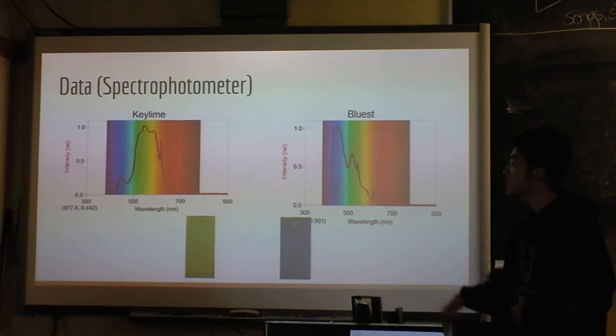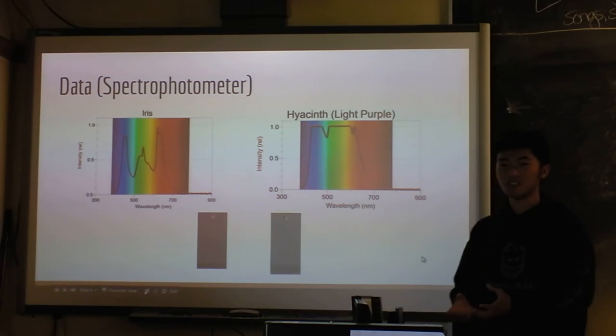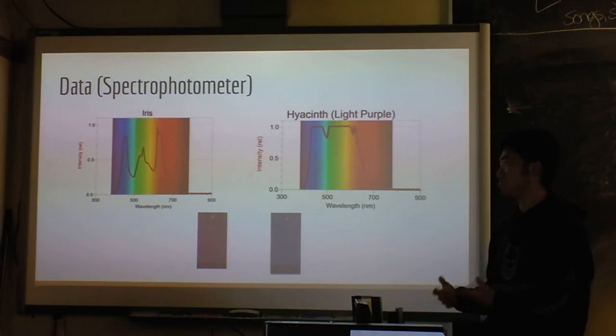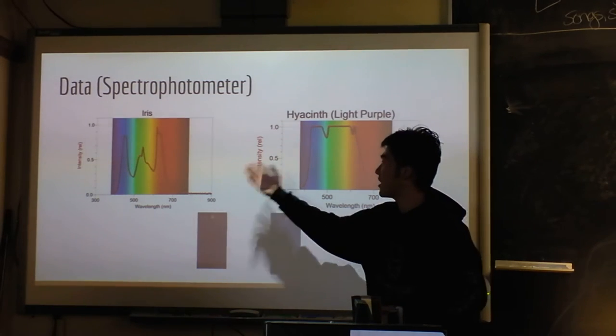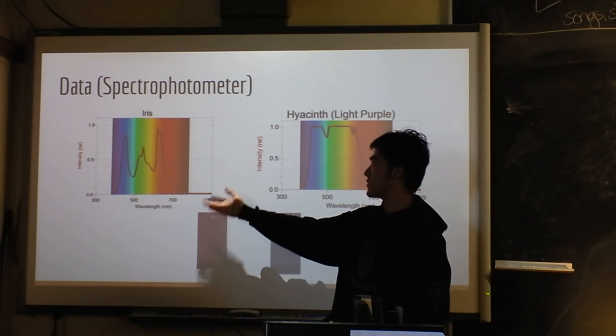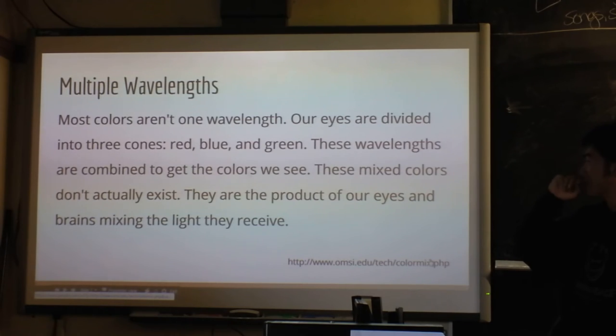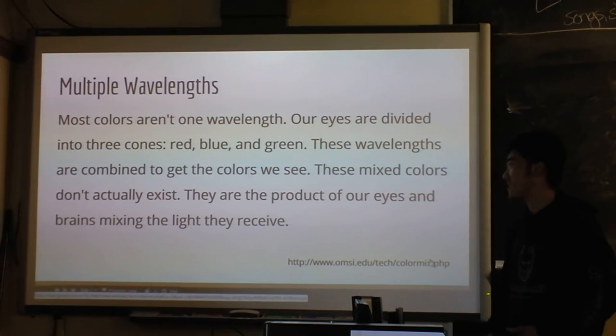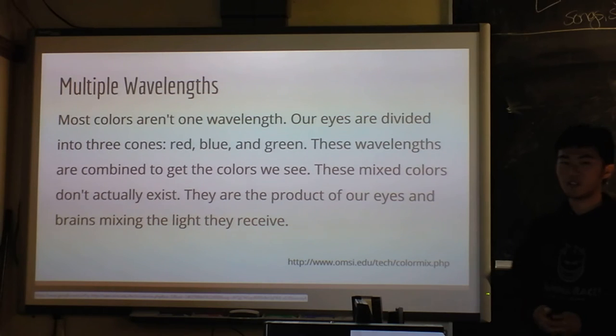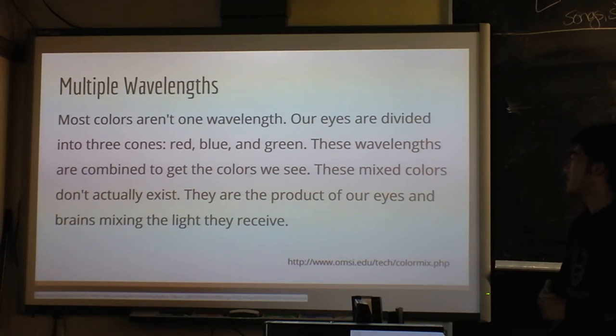And we did more research, and then we realized, okay, so this color seems green, but it's actually not just green. It's blue and green. Or this color, the iris, which is like purple, is purple and blue and green and red and orange. So they're all mixed up. And then we came up with this idea. So basically, all the colors we see in our daily life are actually a mixture of multiple wavelengths. And yeah, that's it.